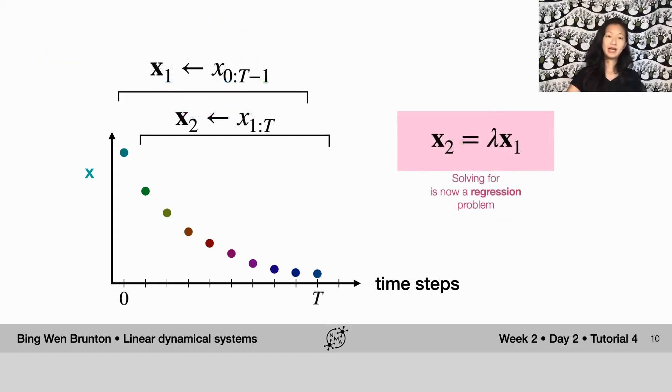What we're going to do is take all of our data points - this is my big vector of data x - and I'm going to slice it up in a very particular way. I'm going to define a new data vector x1, and I'm going to put my data points from the first data point to the next to the last data point. That's going to be x1.